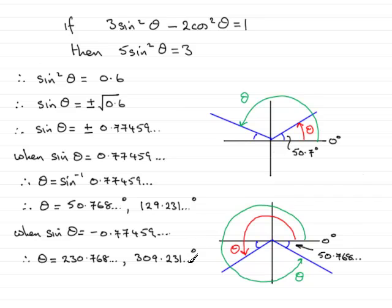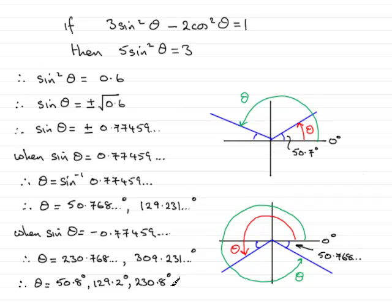Putting both sets of answers together and rounding to one decimal place, theta equals 50.8 degrees, 129.2 degrees, 230.8 degrees, and 309.2 degrees. All values are to one decimal place, and that brings us to the end of this question.